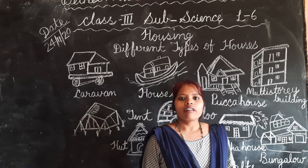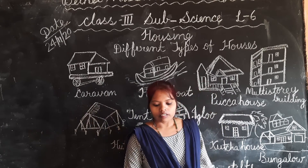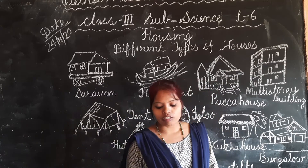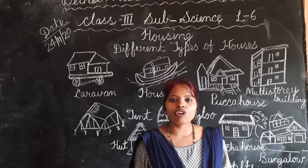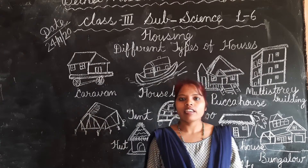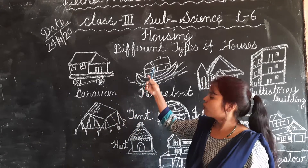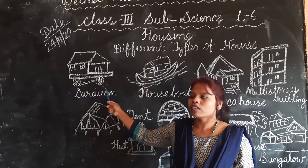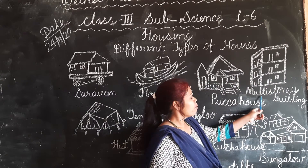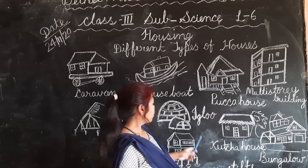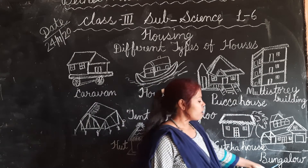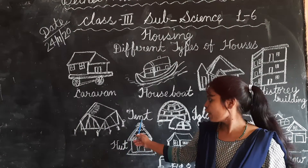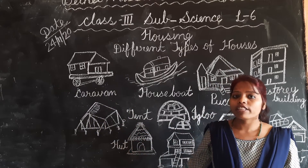What are the things we use to make all these houses? Different houses are made up of different types of material. Look at the blackboard. We can see different types of houses, like caravan, house boat, multi-story building, paka house, igloo, kacha house, bungalow, house on stilts, hut and tent. These are the different kinds of houses.